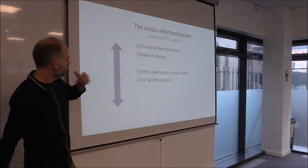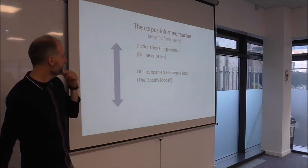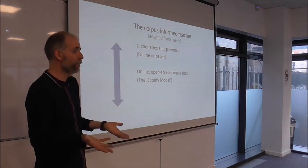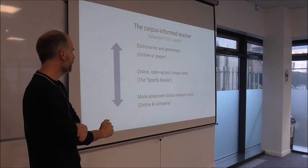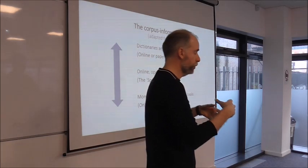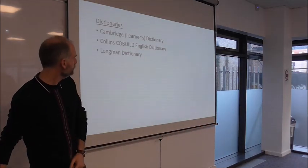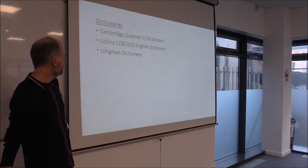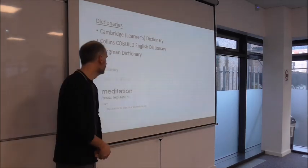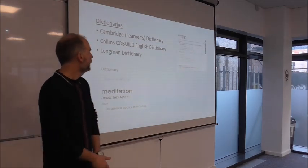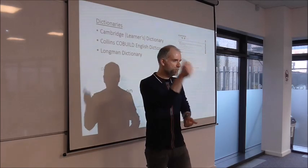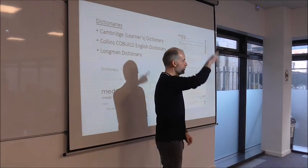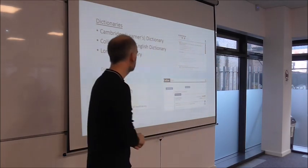The second level is open-access corpus sites, like the TED Corpus I mentioned — what I call the Spotify model, where you register and have a freemium or premium model. Even the freemium model is quite good. Then there are the more advanced ones where you download software, build a corpus, and analyse it yourself. In terms of dictionaries, all dictionaries are corpus-informed now. The word 'meditation' came up in class recently and someone searched Google — it just said 'the act of meditating,' which is frustrating. The Cambridge Learner Dictionary gives the word level — B1, C1 — though it's quite limited. The Collins dictionary is amazing: it has a video, charts of peaks and troughs, and context from the internet.